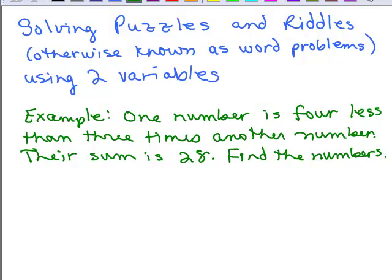We could do this with a single variable, and I'm going to do that first to show you that you don't have to use two variables. Let's let the first number be n, and one number is four less than three times the other.